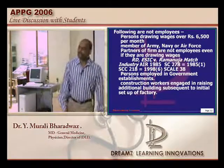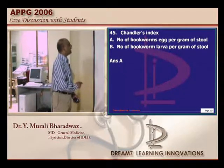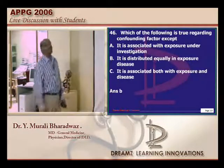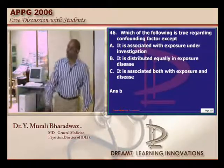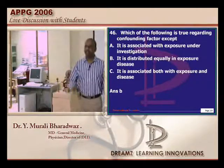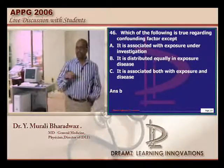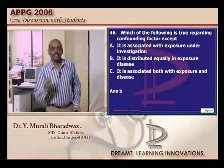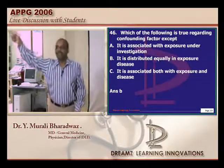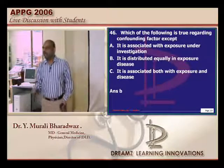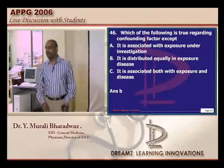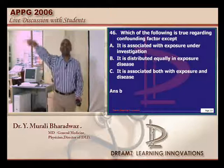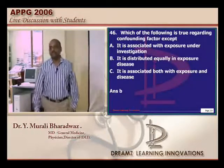Chandler's index — hookworm is X per gram of stool. Regarding confounding factor: suppose you find that somebody is suffering from depression and also going to the office, and his wife is providing idli 4 days out of 7. You can't say depression is responsible because of the idli he is eating. So it is only a confounding factor. A confounding factor is present both in the exposure and also in the disease, but is not responsible for the occurrence of the disease.